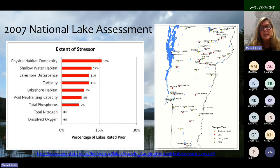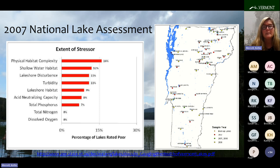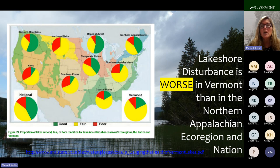Results from the 2007 National Lake Assessment found that in Vermont, the largest proportion of lakes in poor condition was for physical habitat complexity, with 16 percent of the lakes in the state in poor condition. Poor physical habitat complexity affects twice the percent of Vermont lakes that are affected by high levels of phosphorus, and twice the amount affected by acidification from acid rain. Physical habitat complexity is a measure of the condition of the lakeshore and the shallow water habitat combined.